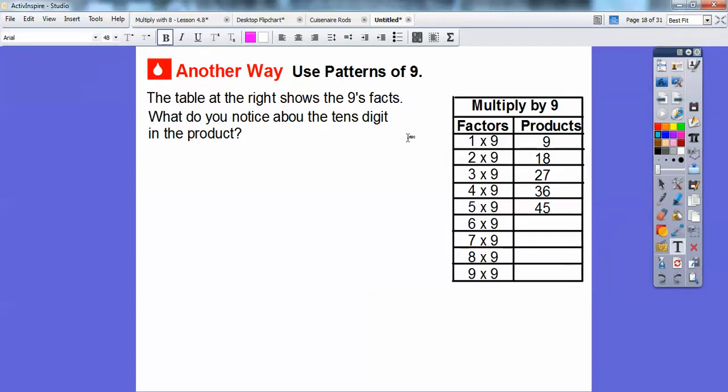So what do you notice about the tens digits? The tens digit in the product. This one doesn't have a tens digit, so we can pretend like there's a zero there. This one, the tens digit is one. This one, the tens digit is two. That's a tongue twister for me. The tens digit here is the three, and this one's the four.